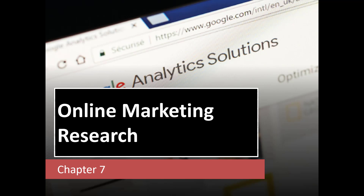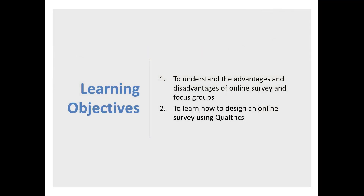Good afternoon everyone. Today our topic is online market research, chapter number seven. Our learning objectives: number one, to understand the advantages and disadvantages of online surveys and their focus groups. Number two, to learn how to design an online survey using Qualtrics.